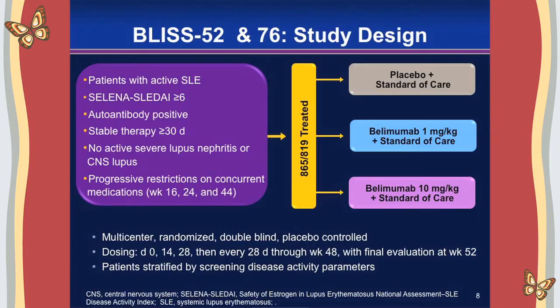The trial design of both studies was basically identical except for length; in both, the primary endpoint was at 52 weeks. Patients had to present with active SLE as designated by the SELENA SLEDAI scale with moderate-to-severe disease activity, be autoantibody positive, and be on stable global standard-of-care therapy for at least 30 days. Patients with severe kidney lupus or CNS lupus were excluded. Dosing occurred by one-hour infusion every month for the entire trial, with an extra dose in the first month to achieve steady-state blood levels faster.